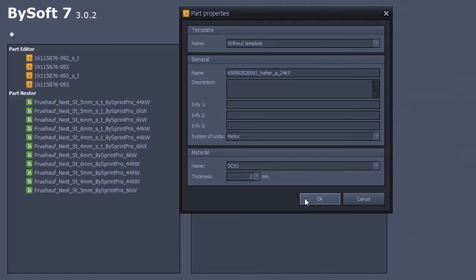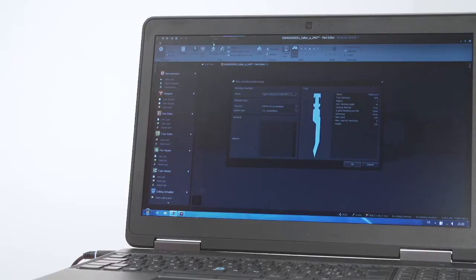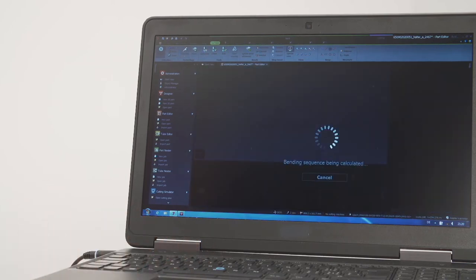You simply and intuitively select the material and sheet thickness. You choose the press brake and correct tools. And BuySoft 7 automatically creates the complete bending program.